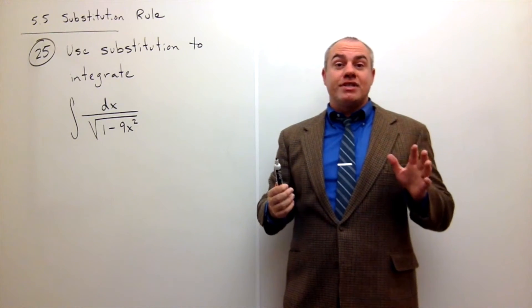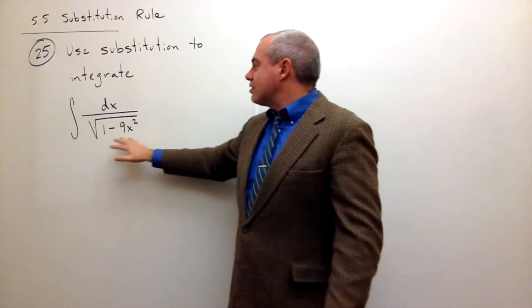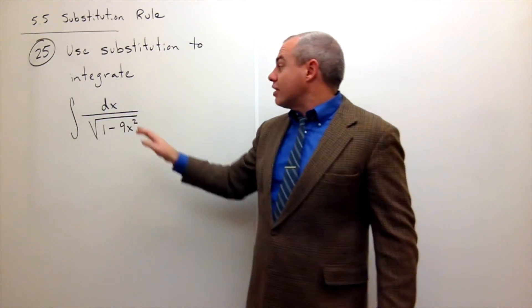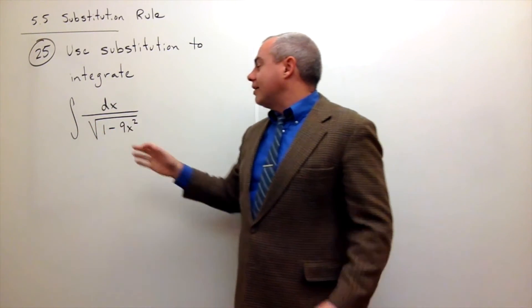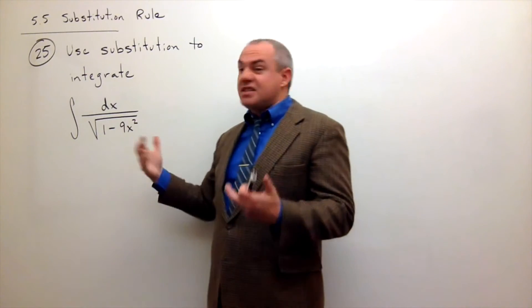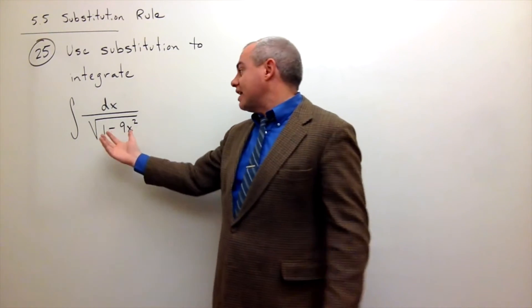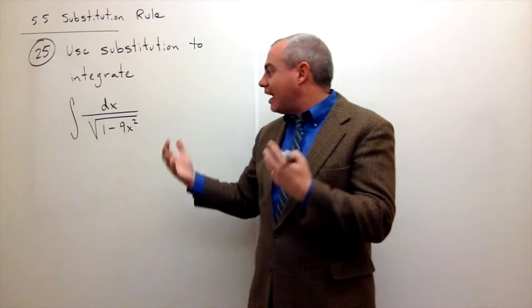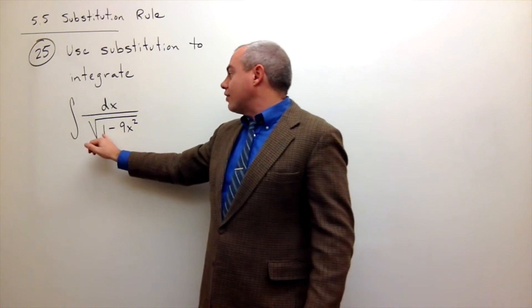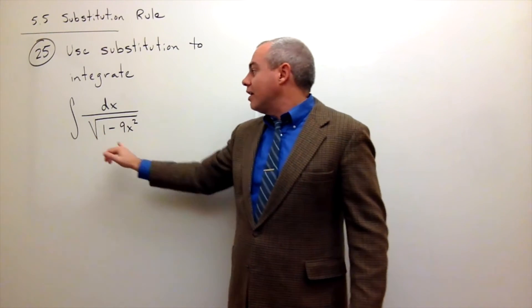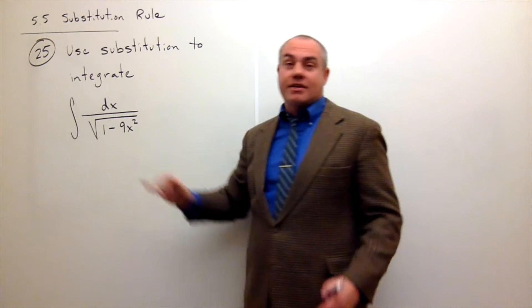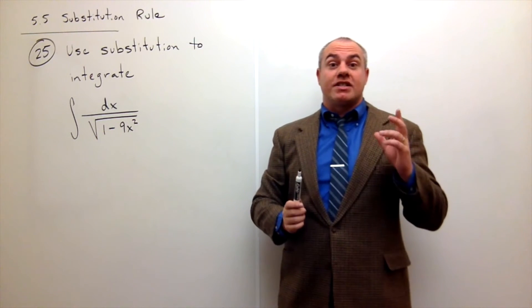But what I do see is this looks very familiar to me. This looks a lot like a sine inverse. Like if I take its antiderivative, it's kind of like sine inverse. Usually sine inverse has a 1 minus x squared, but this has a 1 minus 9x squared. So the only difference is that 9.